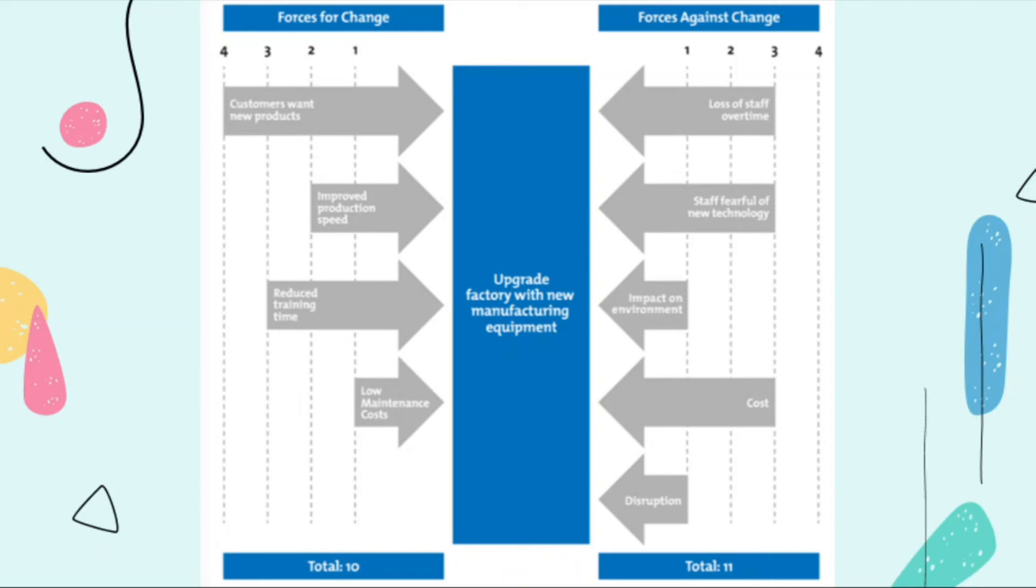For example, staff fearful of the new technology. What are you going to do? Train them. But it will add to the cost, it will add cost. But it will reduce the staff fearful of new technology because there are trainings. So maybe this becomes one, but the cost increases. Next, for example, you can tell the staff, make them understand that change is necessary for business survival. So this can support the change, increasing staff understanding about the change we want to implement in the company.